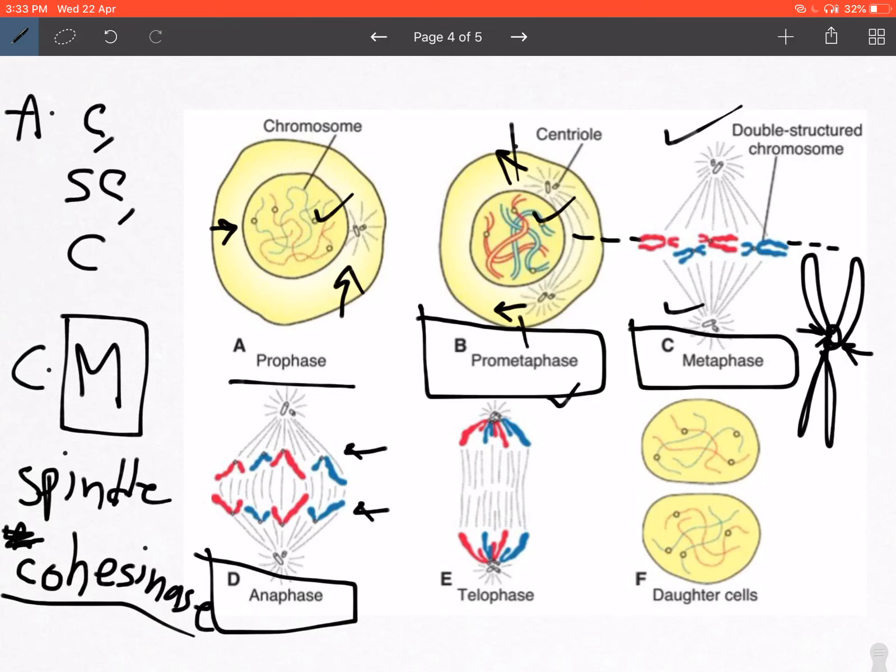We move on to the next phase that is known as telophase. What happens in telophase is that the sister chromatids have now reached the opposite poles, and the nuclear membrane starts reappearing. Finally you have what is known as cytokinesis, where the cytoplasm also equally differentiates to form the two daughter cells.